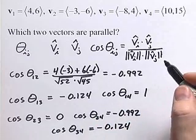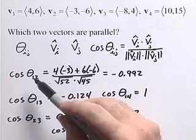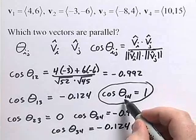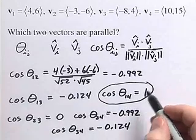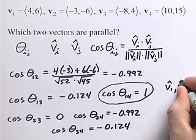When two vectors are parallel, the cosine of the angle between them is equal to 1. When we look at our resulting cosines, we see that the cosine of theta for vectors 1 and 4 is equal to 1, and so vectors 1 and 4 are parallel.